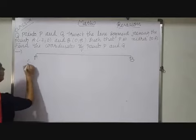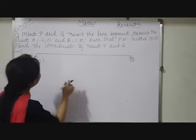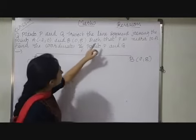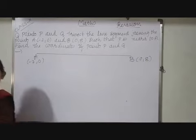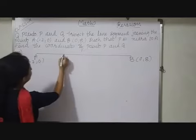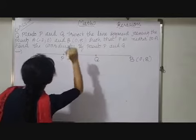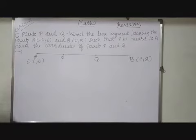A coordinate given, minus 2, 0, B is also given, that is 0, 8. Such that P is nearer to A. So somewhere here we will have P and here we will have Q. And we have to find the coordinates of points P and Q.